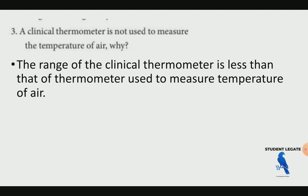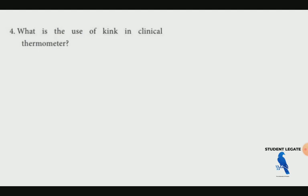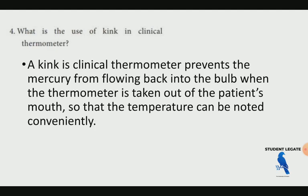What is the use of the kink in the clinical thermometer? The kink in the clinical thermometer prevents the mercury from flowing back into the bulb when the thermometer is taken out of the patient, so the temperature can be noted conveniently.